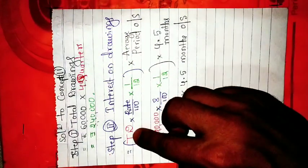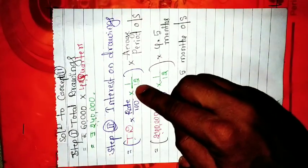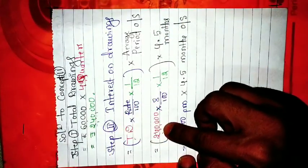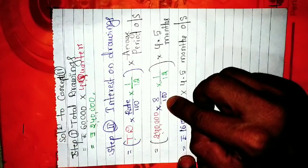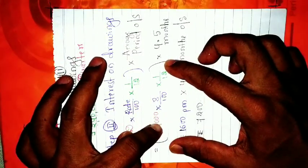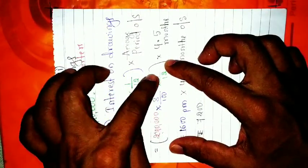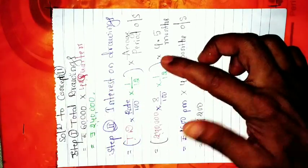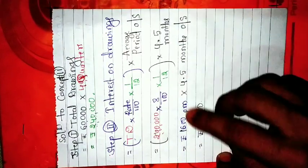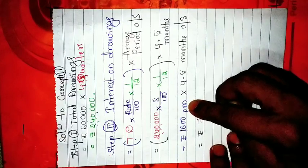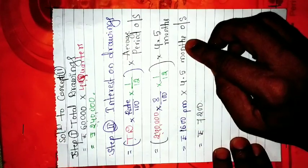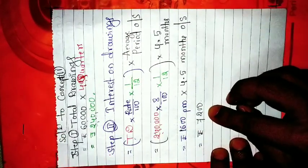Interest on drawings formula: total drawings × rate ÷ 100 × 1/12 × average period outstanding. Total drawings from Step 1, rate 8 ÷ 100, times 1/12, times 4.5.